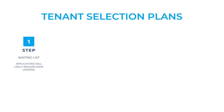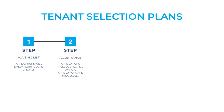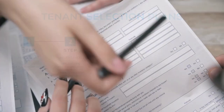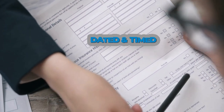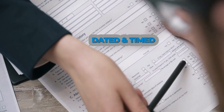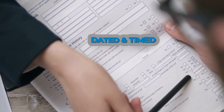With that being said, the procedures for accepting applications will have to be a part of your tenant selection plan. Tell them in what order you will receive them, how you will receive them, how you will grade them, where they'll go on the list, how they go on the list. Make sure that the application is dated and timed and they're put on the list chronologically.